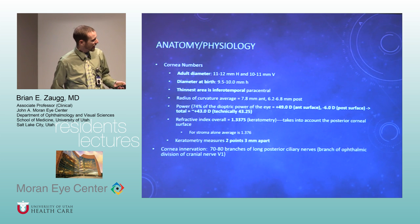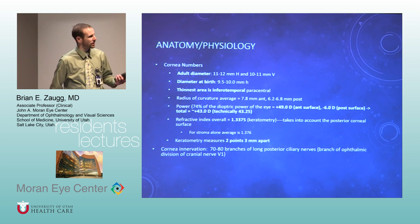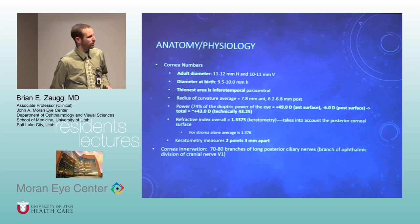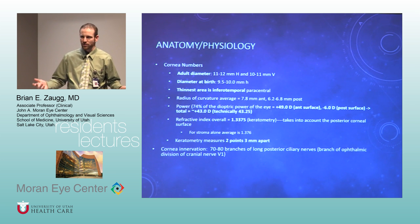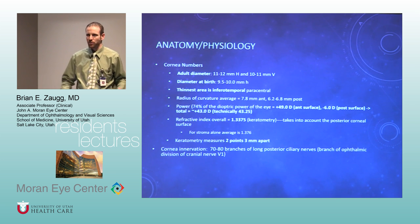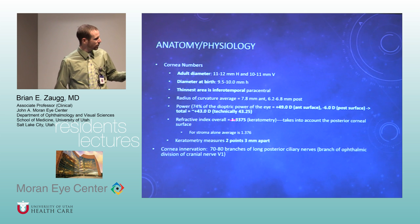The power of the cornea is something they love to ask about. The anterior surface is about +49 diopters, the posterior surface is about -6, giving a total corneal power of about +43 diopters. The average corneal power is about 43–44 diopters, so remember the posterior cornea has negative power. The overall refractive index is another thing they bring up: 1.33.